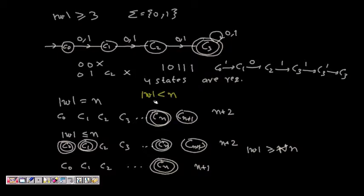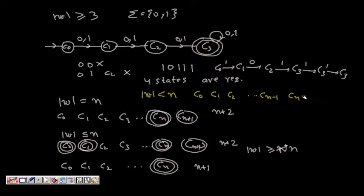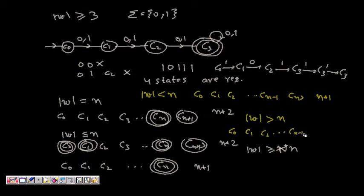For mod|w| < n: states c0 through cn−1 are acceptance states, and anything beyond goes to a dead state, requiring n+1 states total. For mod|w| > n: states c0 through cn−1 exist, and cn−1 has a self-loop since any length greater than n is accepted — so n states are required.